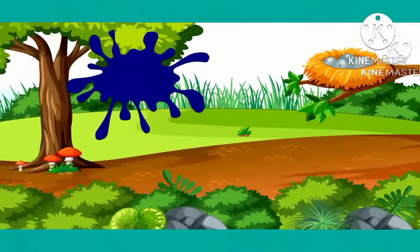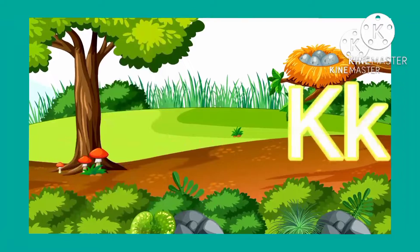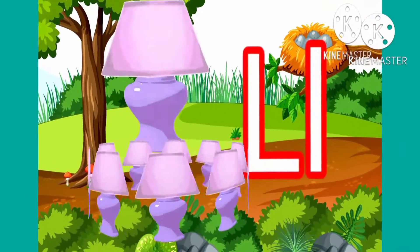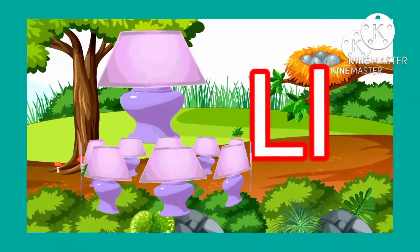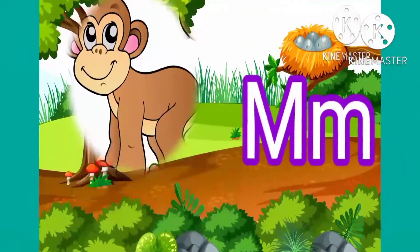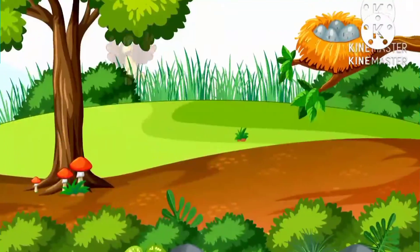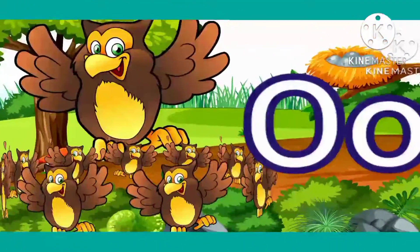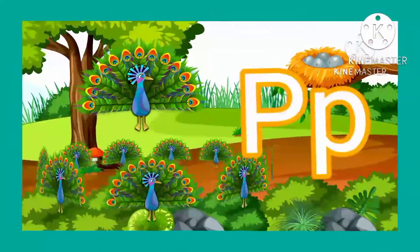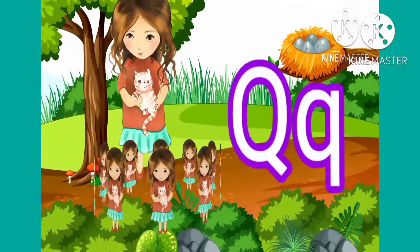I for ink, J for jog, K for kabutol, L for lamb, M for monkey, N for nest, O for old, P for peacock, Q for queen.